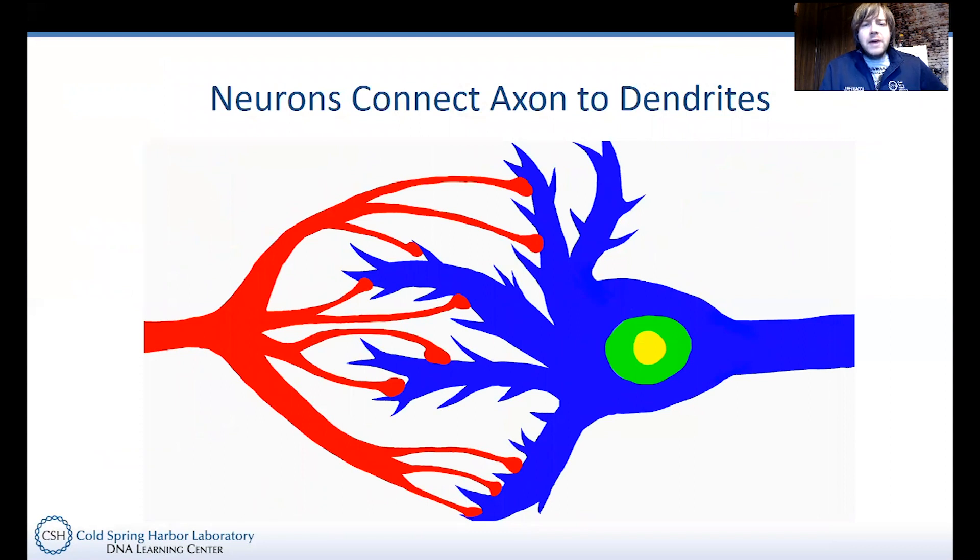And if we get a closer look at the connection between the telodendria and the dendrites of a second neuron, we can see the presynaptic cell here in red is basically joined on the dendrites of the postsynaptic cell here in blue at these little synaptic terminals. And so the junction between the presynaptic and postsynaptic cell is called a synapse.